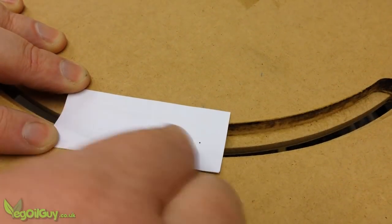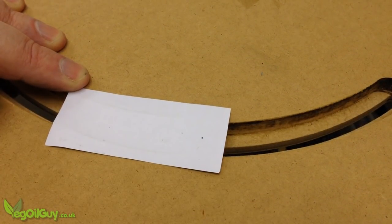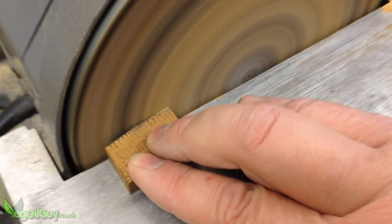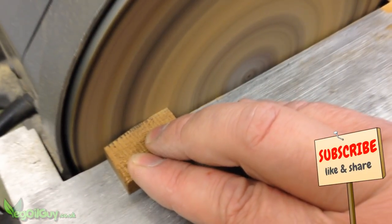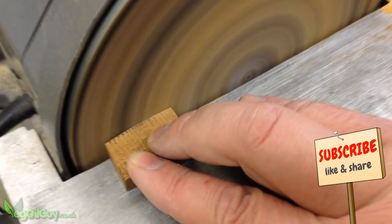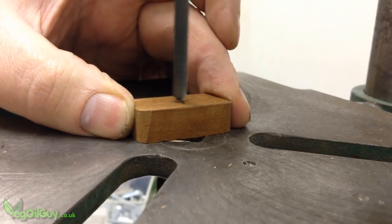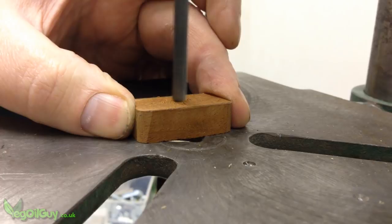Using a scrap of paper, I made a simple template of the slot shape. I transferred this onto a section of hardwood and sanded into shape. A hole was drilled through the centre of this to receive a bolt.